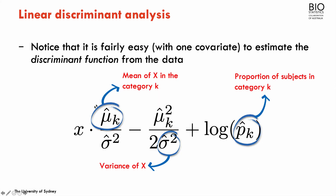Finding the category with the highest probability is equivalent to finding the category with the highest value in the discriminant function. This is straightforward because we just need estimates for the parameters: the means of the predictor for each category of the outcome, the weighted variance — an estimated variance that is the weighted variance between categories — and the relative frequency, i.e., the proportion of individuals in each category of the outcome.